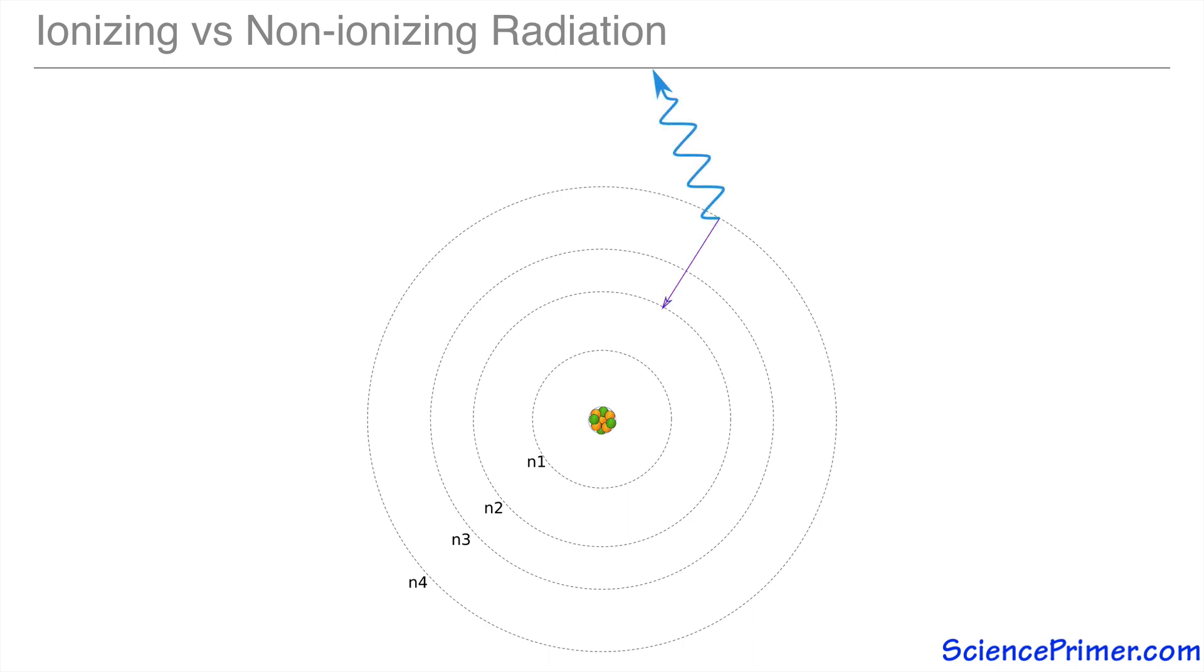And then, when that excited electron drops back down to its original stable orbital, the energy it absorbed is re-radiated as electromagnetic energy with a longer wavelength and lower frequency than the energy it initially absorbed.